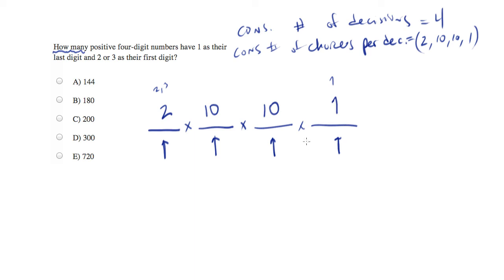When that's the case—constant number of decisions and constant number of choices per decision—we can simplify this. You take the number of choices in each decision, multiply them together, and the answer will be the number of combinations, which is 200.